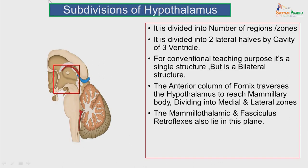The hypothalamus is divided into a number of regions or zones by the two lateral halves per the cavity of the third ventricle. For conventional teaching purposes, it is studied as a single structure, but basically it is a bilateral structure. The anterior column of the fornix traverses the hypothalamus to reach the mammillary body, dividing the hypothalamus into medial and lateral zones.